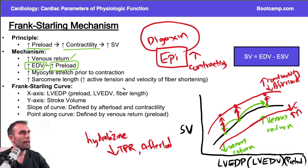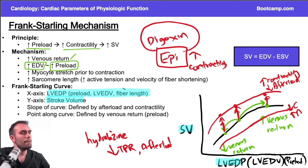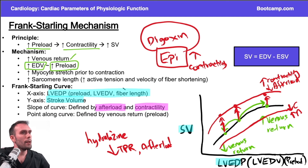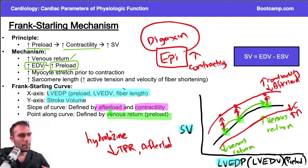To recap: the x-axis is primarily associated with preload; the y-axis is primarily associated with stroke volume. The slope of the curve is defined by afterload and contractility — a higher contractility or lower afterload produces a steeper, higher curve. The specific point along the curve is defined by venous return: more venous return means a higher stroke volume.